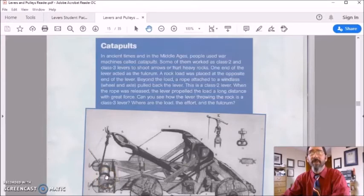This is a class two lever. When the rope was released, the lever propelled the load a long distance with great force. Can you see how the lever throwing the rock is a class three lever? Where is the load? Where is the effort? And where is the fulcrum?